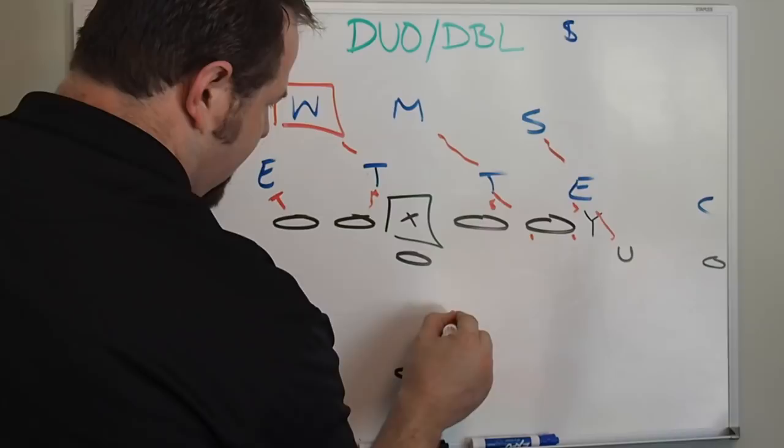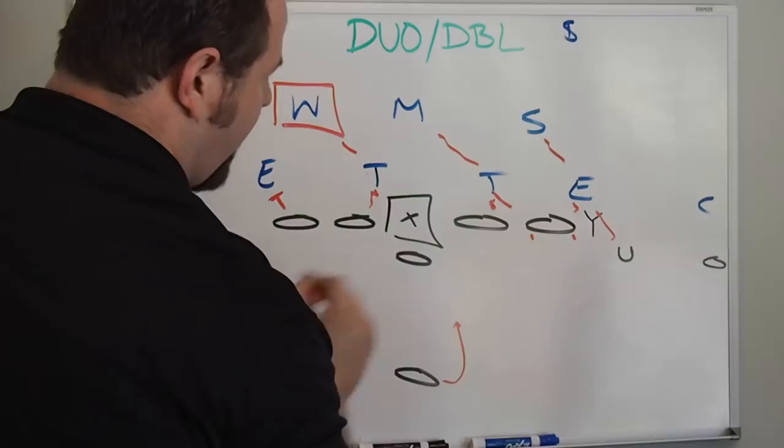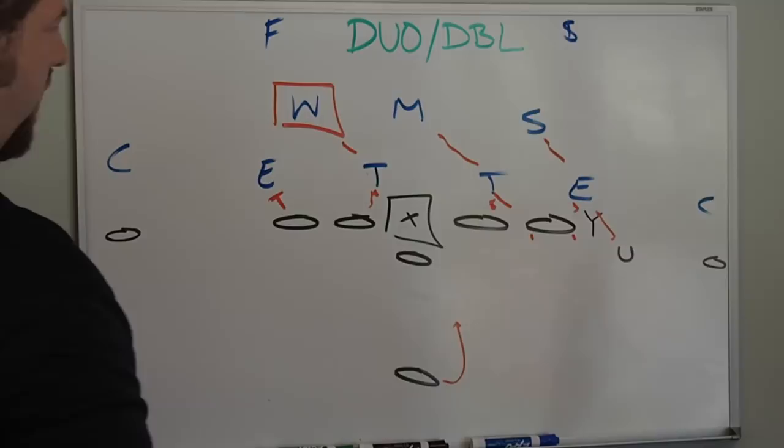On this play it's a gap play. So the footwork is right downhill like this. So it's not a zone footwork where you're coming out here where you're drop stepping. It is downhill right away like a power run, because on power if you pull this guy right here you're coming in the A gap.